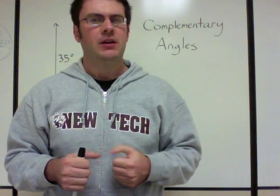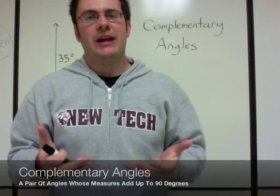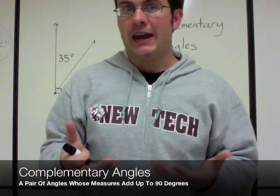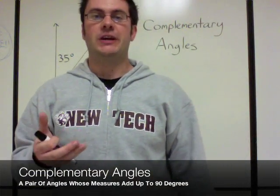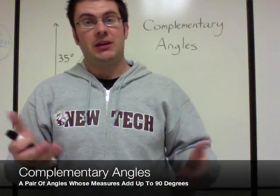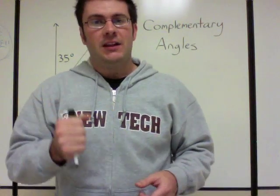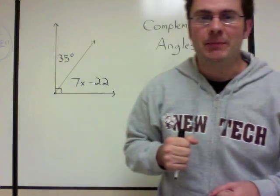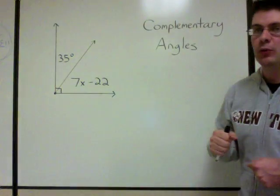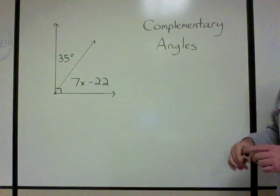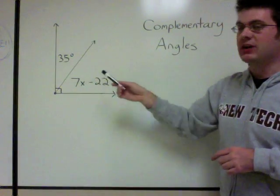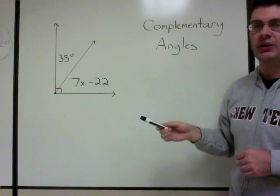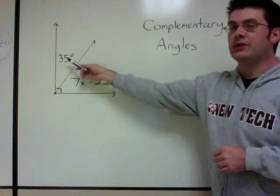First, let's take a look at complementary angles. Complementary angles are two angles whose measures add up to 90 degrees. Here on the board we have two complementary angles: 35 degrees and 7x minus 22.